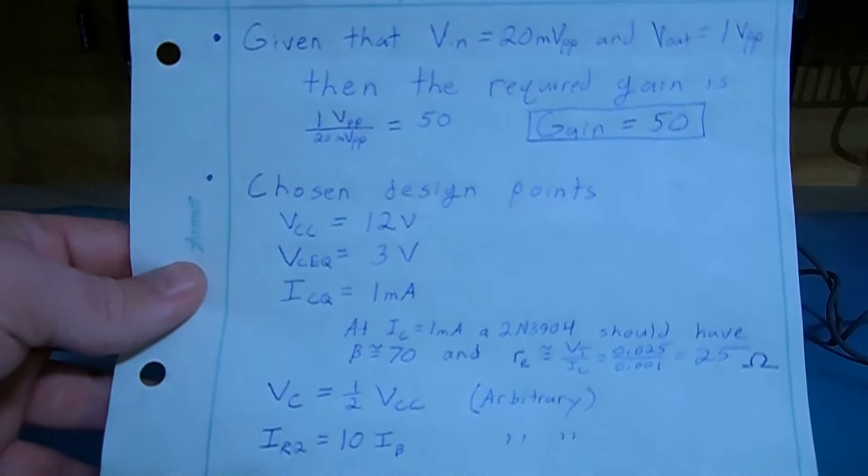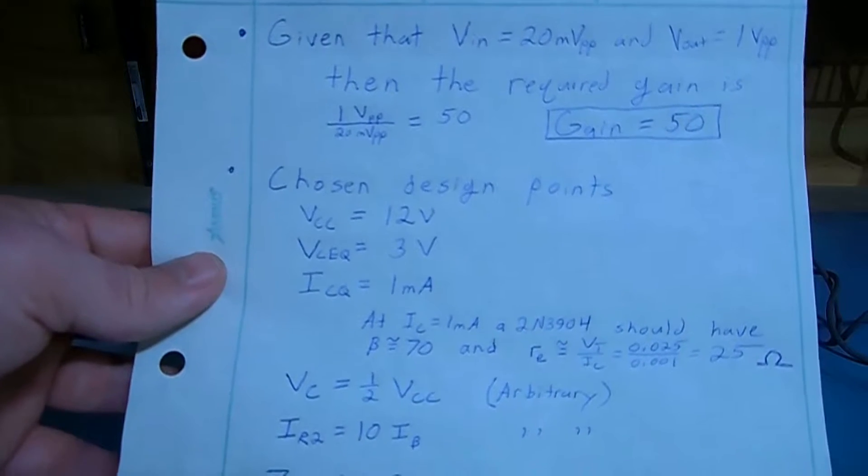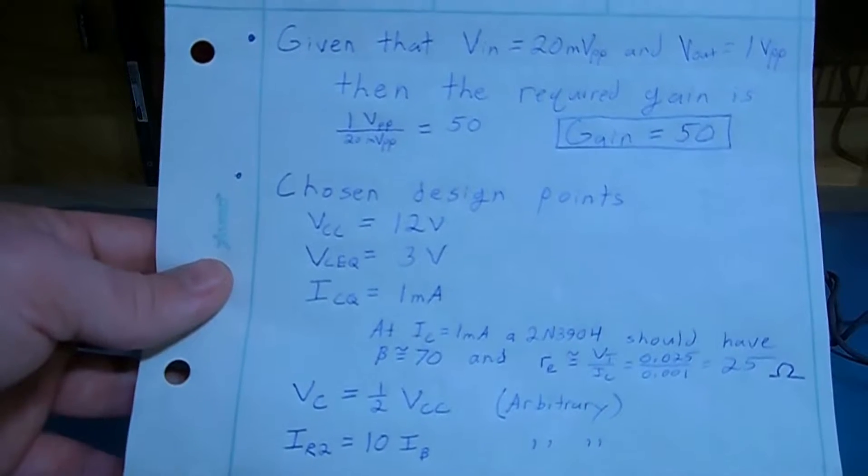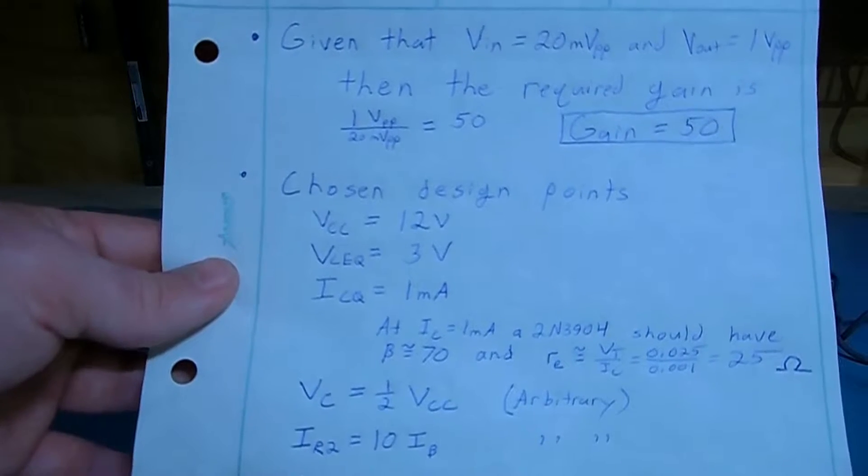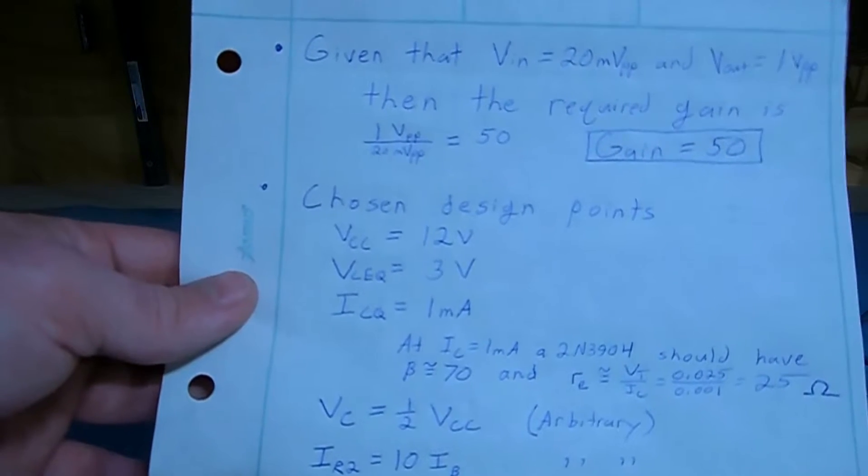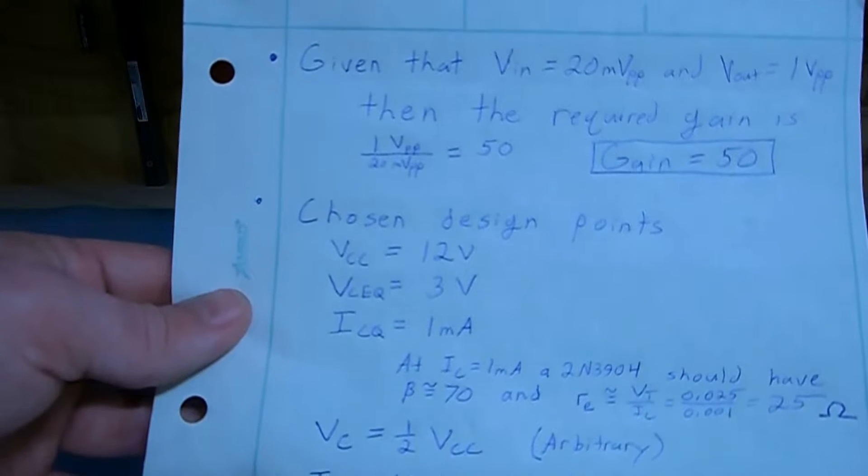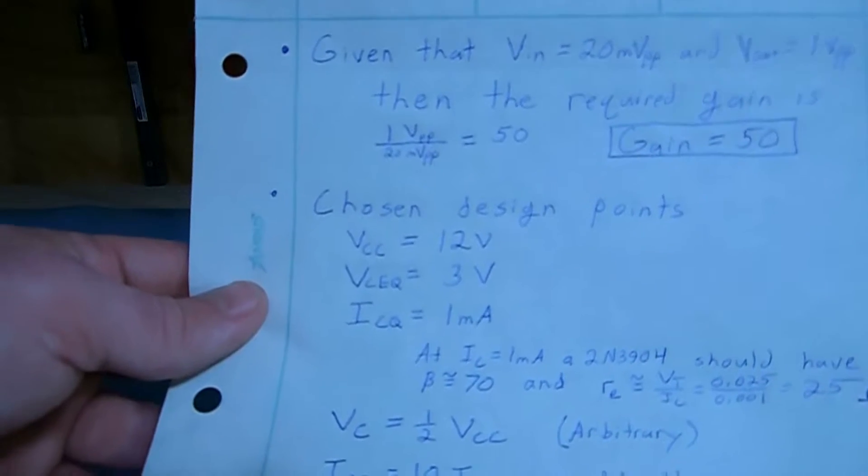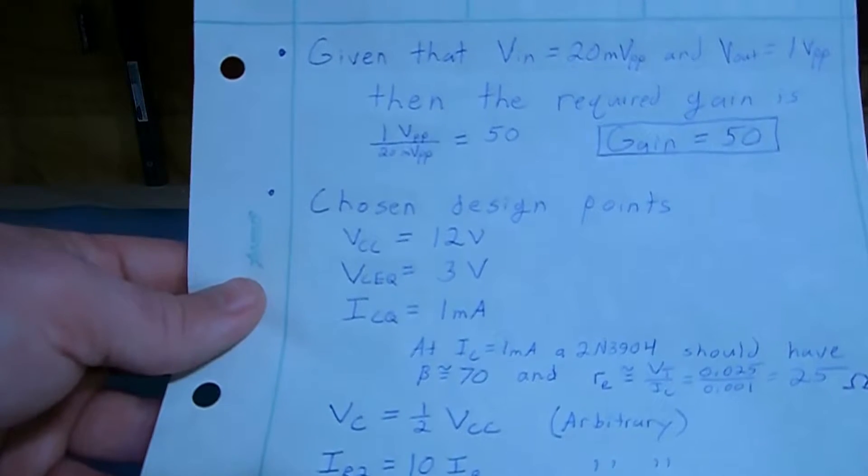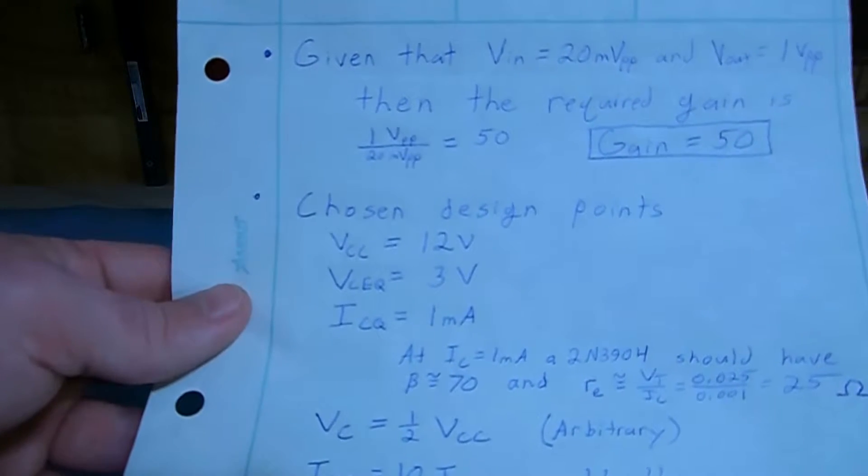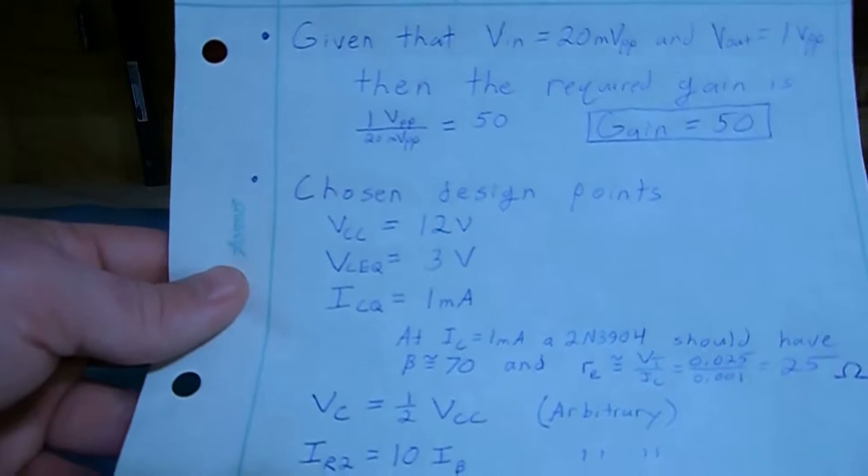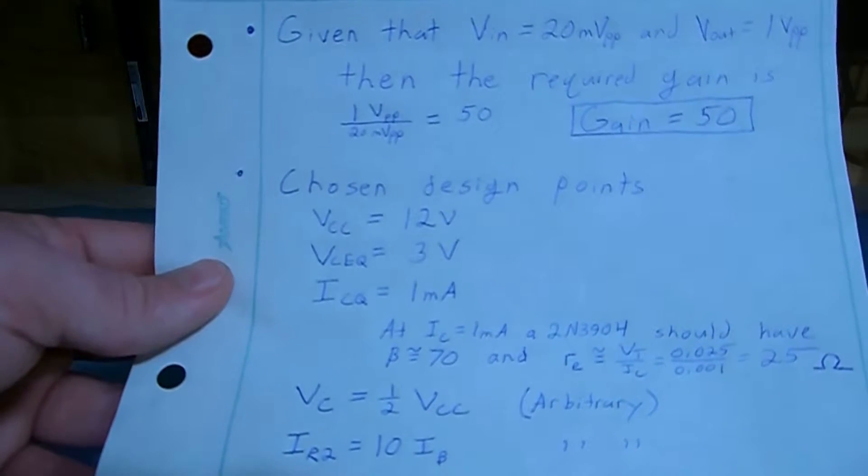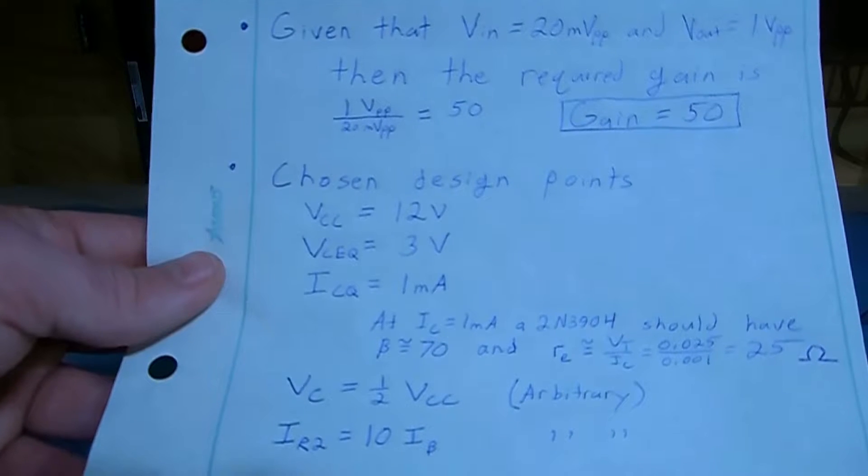Next we're going to start the design by choosing a few design criteria just to get us in the right direction as far as our calculations. First we're going to choose our power supply to be 12 volts just because it's a commonly available voltage. We're going to choose our collector-to-emitter voltage for bias to be 3 volts, and we want 1 milliamp of bias current flowing through the collector of the transistor.